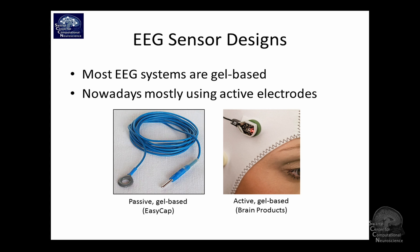There are also active electrodes which have little amplifiers in them. In that case, the signal is already amplified when it travels through the cable, as opposed to passive electrodes where you are transporting microvolts through the cable. So the electromagnetic artifacts are much lower in active electrodes, and also cable sway.